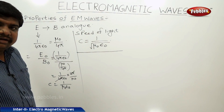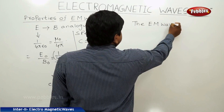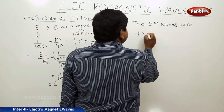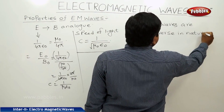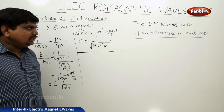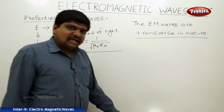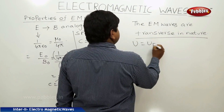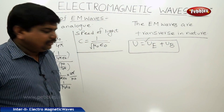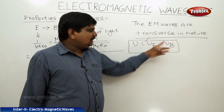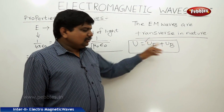Electromagnetic waves are transverse in nature — this is also an important property. Regarding the energy of an electromagnetic wave, the total energy is equally partitioned: it equals the energy due to the electric field plus the energy due to the magnetic field, which is the sum of electric field energy and magnetic field energy.